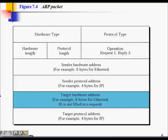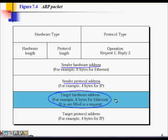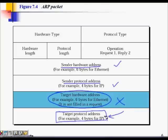Now let's look at the ARP packet format. In a request, the sender includes its own hardware address (6 bytes), its own IP address (4 bytes), the target IP address it is looking for, and leaves the target hardware address field empty since that is unknown. Reading this packet, system B will know it must reply with its hardware address.